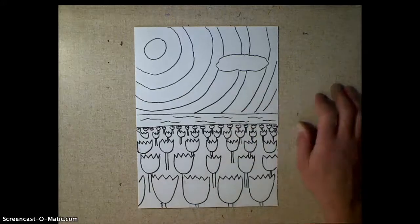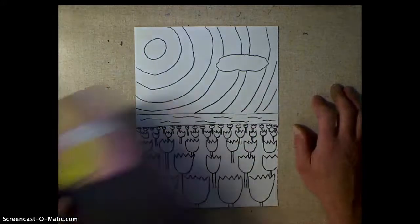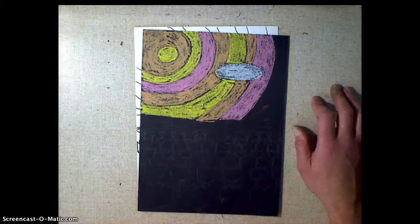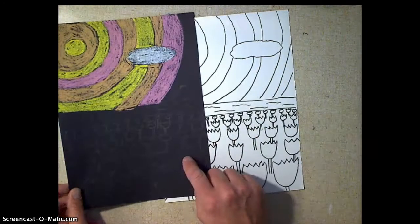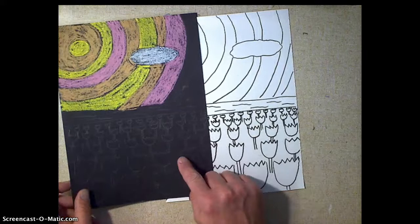Okay guys, so here was my finished drawing that I did on the black paper. Now I would normally just draw it right on the black paper. I didn't know if you could see the pencil on the black paper.